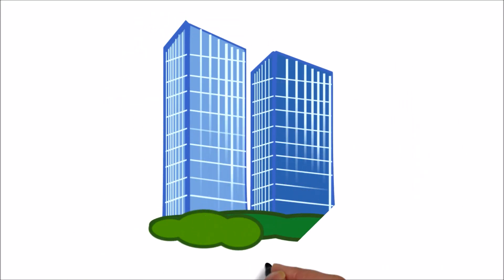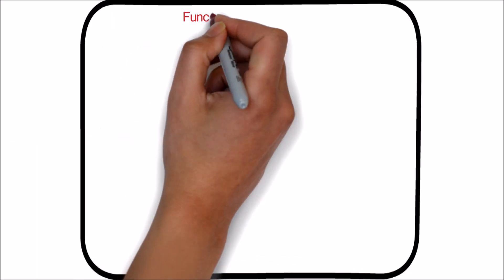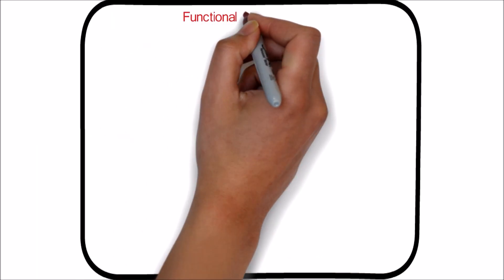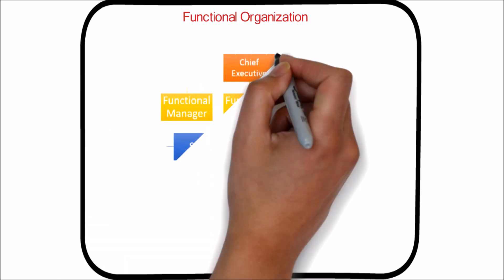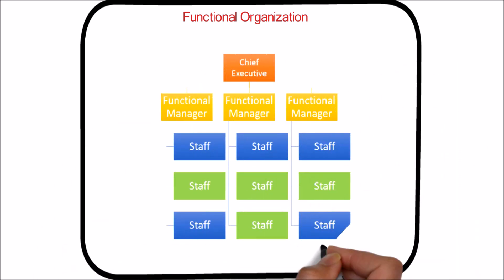Let's look at different types of organizational structure in this video. First we will look into functional organization. In functional organization, each employee has one clear superior. Staff members are grouped by specialty, such as production, marketing, engineering, and accounting at the top level.